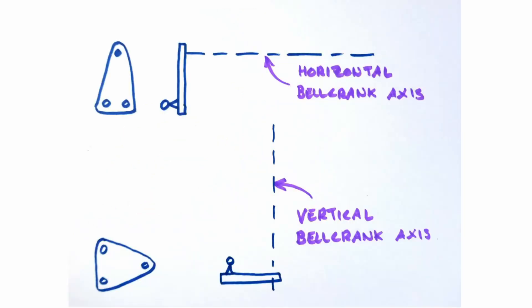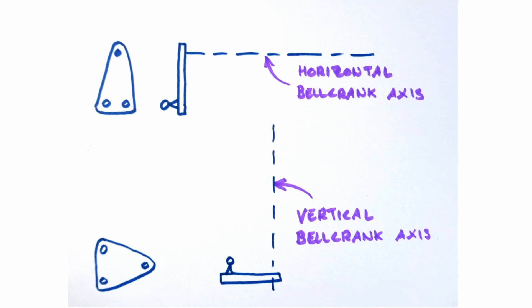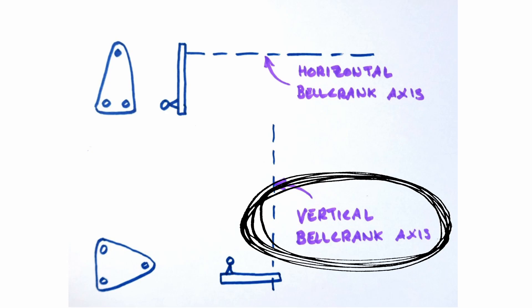The bell crank can be horizontal or vertical or somewhere in between and this is actually important as I will explain shortly. This diagram shows the bell crank in the horizontal and vertical positions. By horizontal I mean that the axis around which it rotates is horizontal and vertical the axis around which it rotates is vertical.